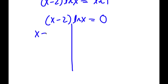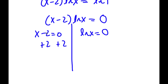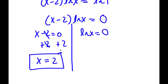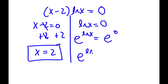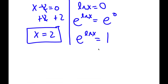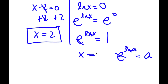This gives me two equations: x minus 2 is equal to 0, and ln x is equal to 0. For x minus 2 equals 0, I add 2 on both sides, so x is equal to 2. For ln x equals 0, I take e to the power of both sides: e to the power of ln x is equal to e to the power of 0. Anything to the power of 0 is 1, so e to the power of 0 equals 1. And since e and ln cancel out, x is equal to 1.